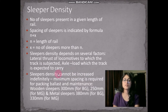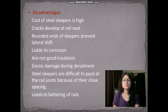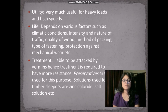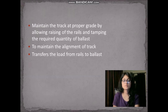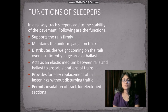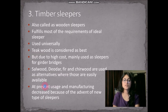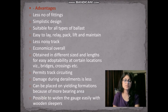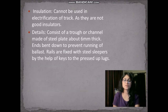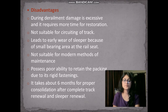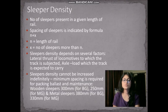Summary recap: we studied what a sleeper is, the characteristics of a good sleeper, and types of sleepers — longitudinal sleepers (used before, now obsolete) and transverse sleepers (currently used), which are classified by material as timber, steel, cast iron, and concrete sleepers, with their respective advantages and disadvantages.